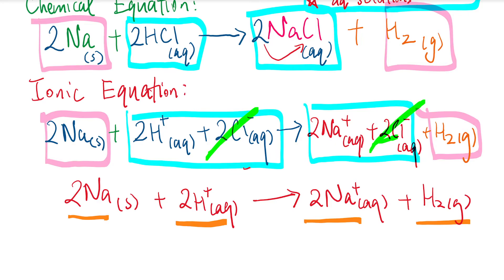So what was the purpose of the chloride ion? Actually, nothing. This is what we call the spectator ion — it's just enjoying the show, just a spectator in the whole reaction. The main characters were the sodium metal, the hydrogen ions, the sodium ions, and the hydrogen gas. That's the logic behind ionic equations — they specifically tell us which elements or ions were particularly involved in the reaction.